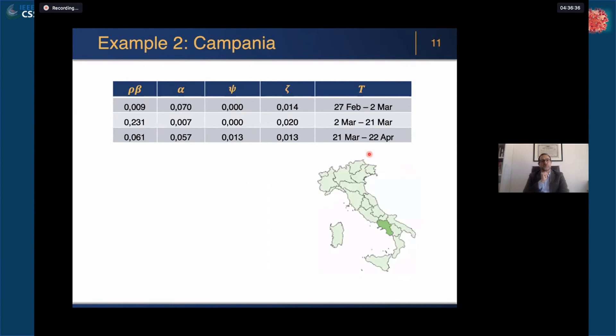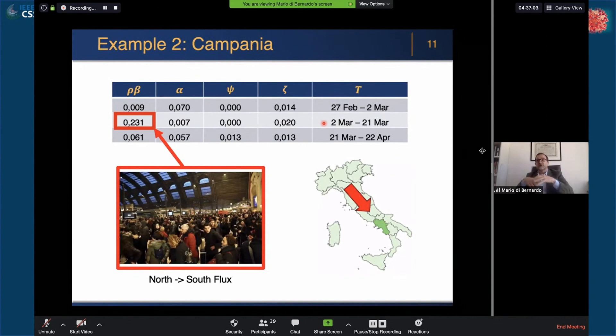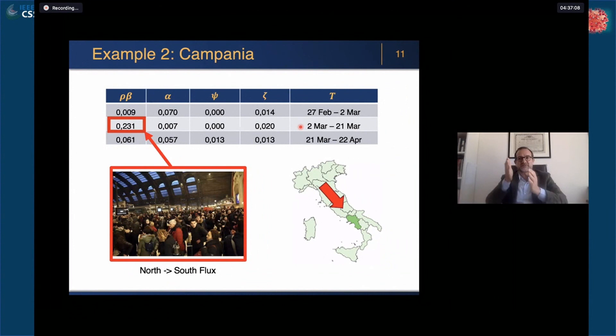Let's now move to Campania. Here there is another interesting observation. We luckily had here in the south a very low number of cases at the beginning. But I want you to notice this sharp increase in the second window, 21st of March. One possible reason might be the famous and infamous North to South flux that was much publicized on the media that followed the first general lockdown. A lot of people moved from the north to the south.